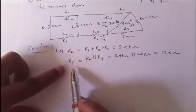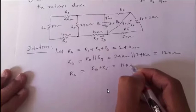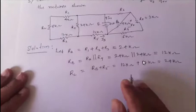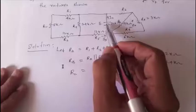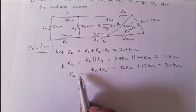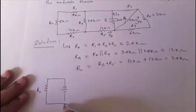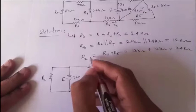Now rb is in series with r5. Let rc = rb + r5 = 12 kΩ + 12 kΩ = 24 kΩ. This rc represents the entire left side of the network. The reduced network has rc in parallel with the 72 V voltage source e, and r6 on the right side.